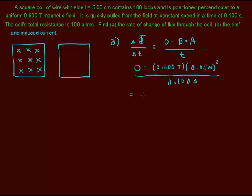And that is going to come out to 1.5 times 10 to the negative 2 Webers per second. Now, mind you, I didn't mention a unit for magnetic flux as the Weber. So that's the rate of change in flux.